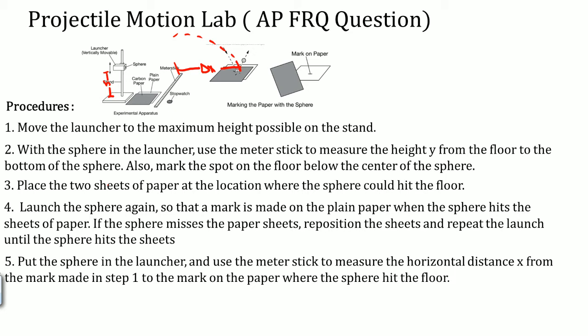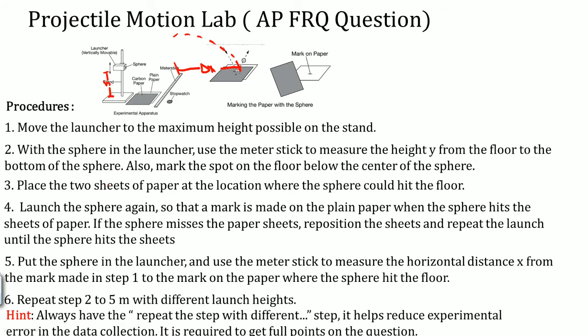From the launch. Now always have the last step repeating this with different launch heights or in this case with something different. The reason why is because it helps reduce experimental error in the data collection. This is always required to get points. The more trials you have, the better accuracy of the data that you record. That's why you always want to repeat it.